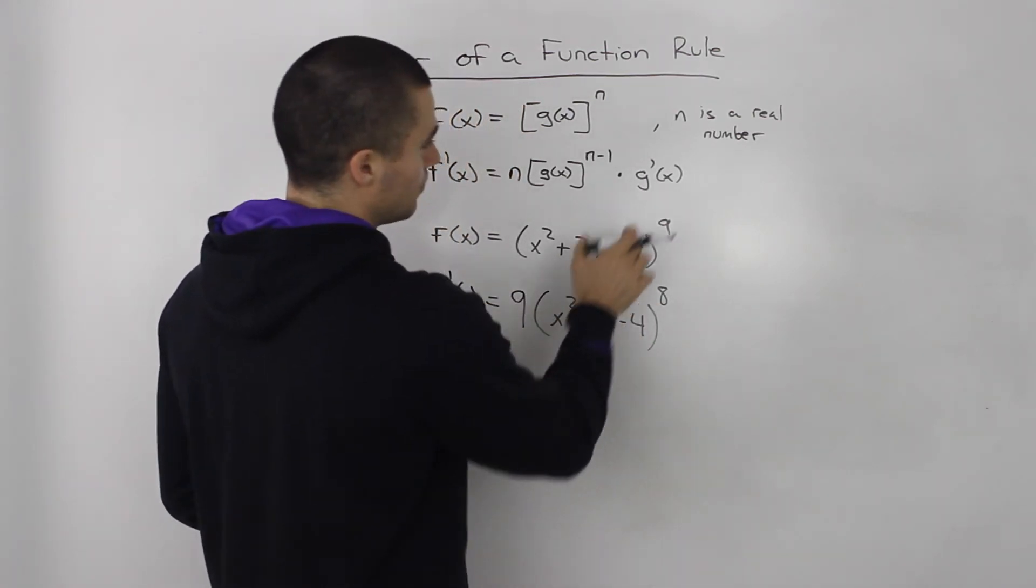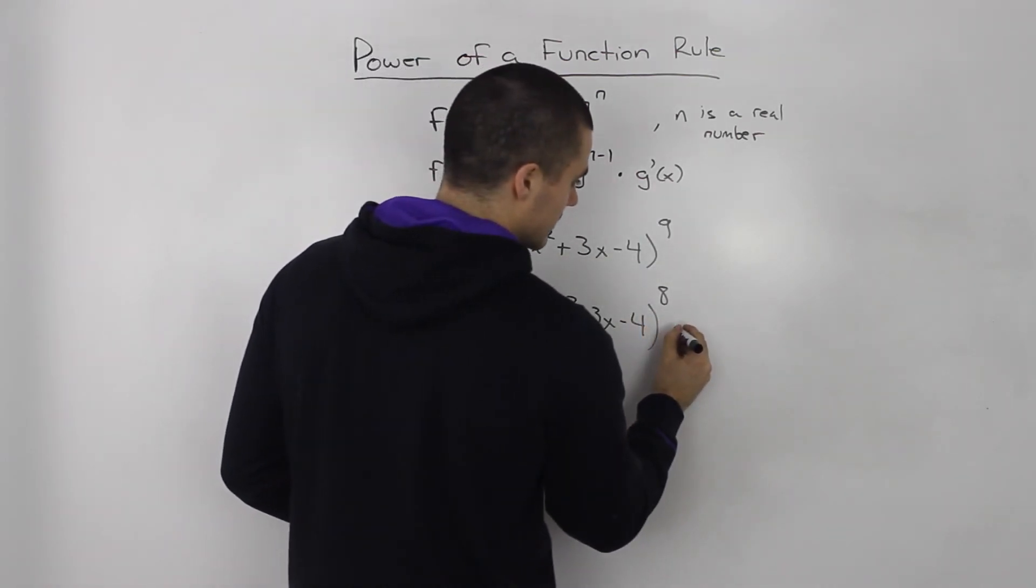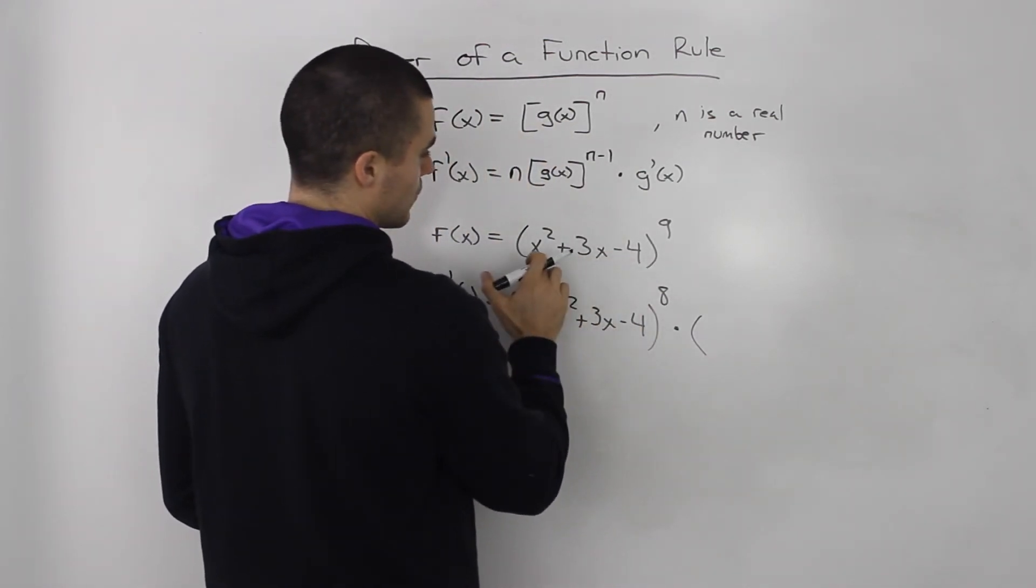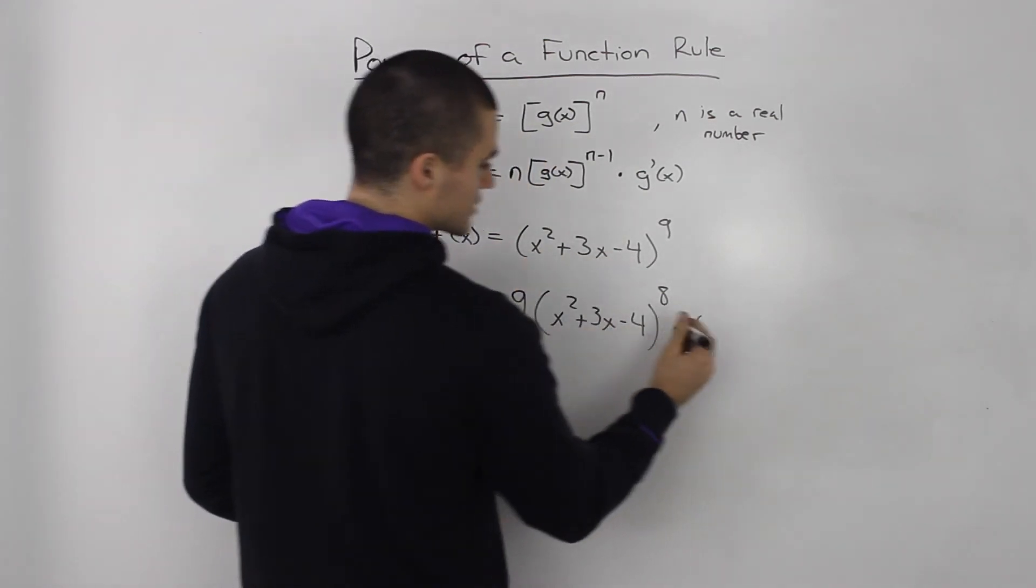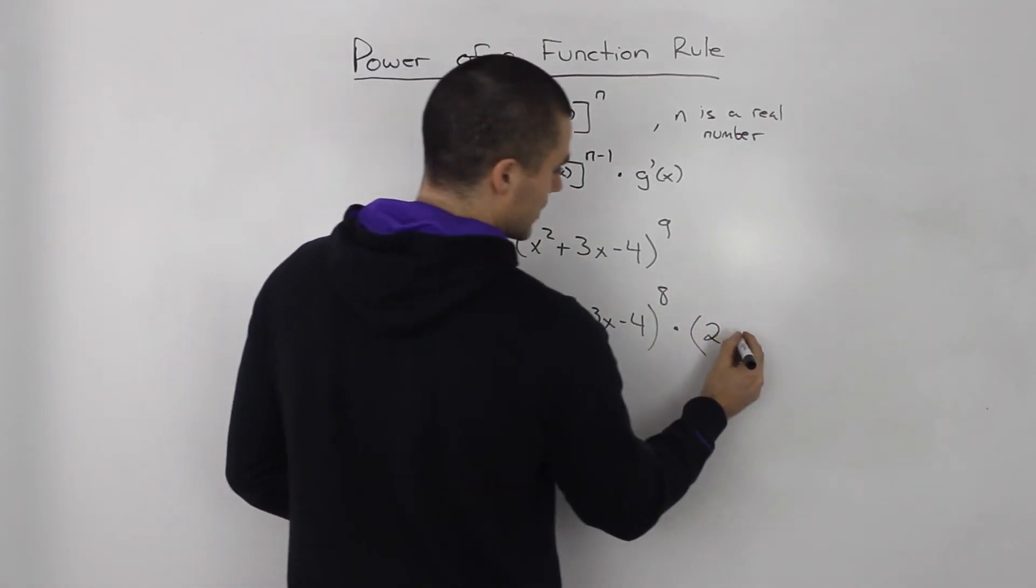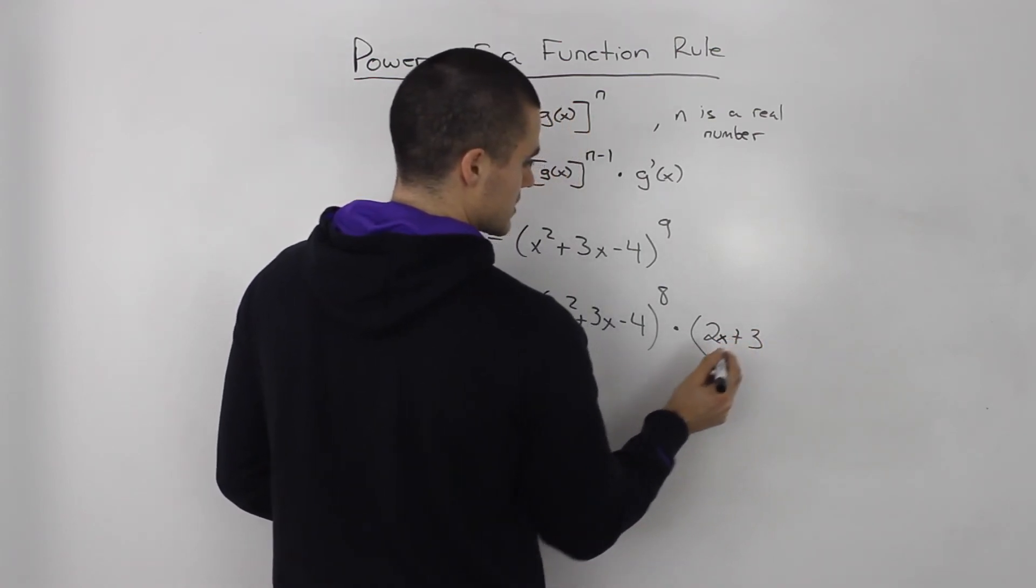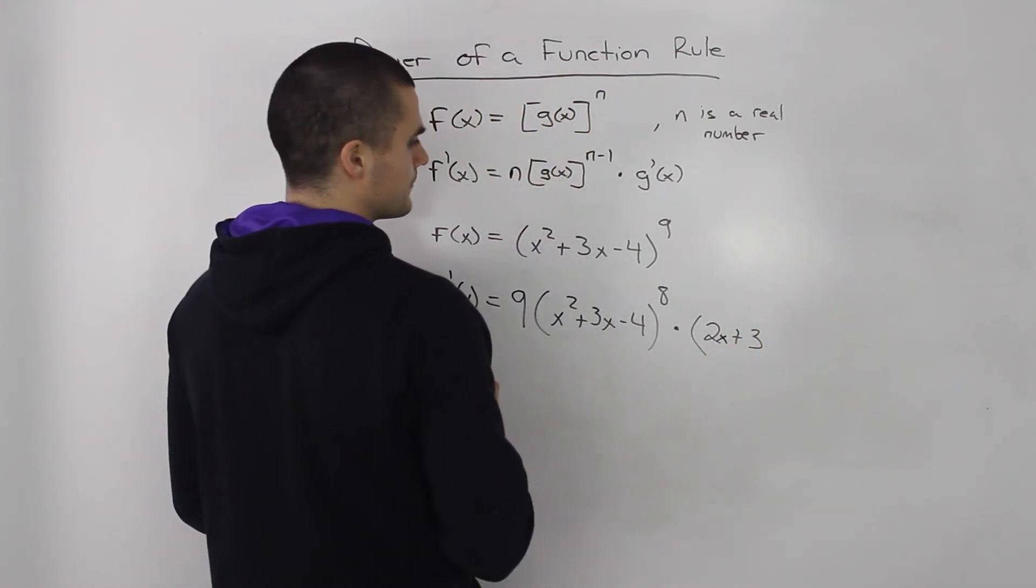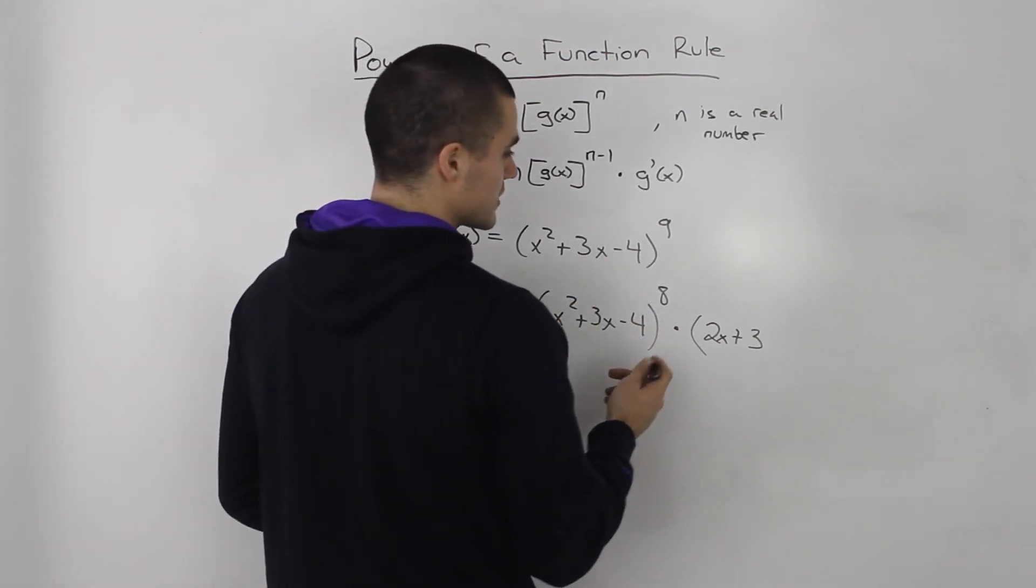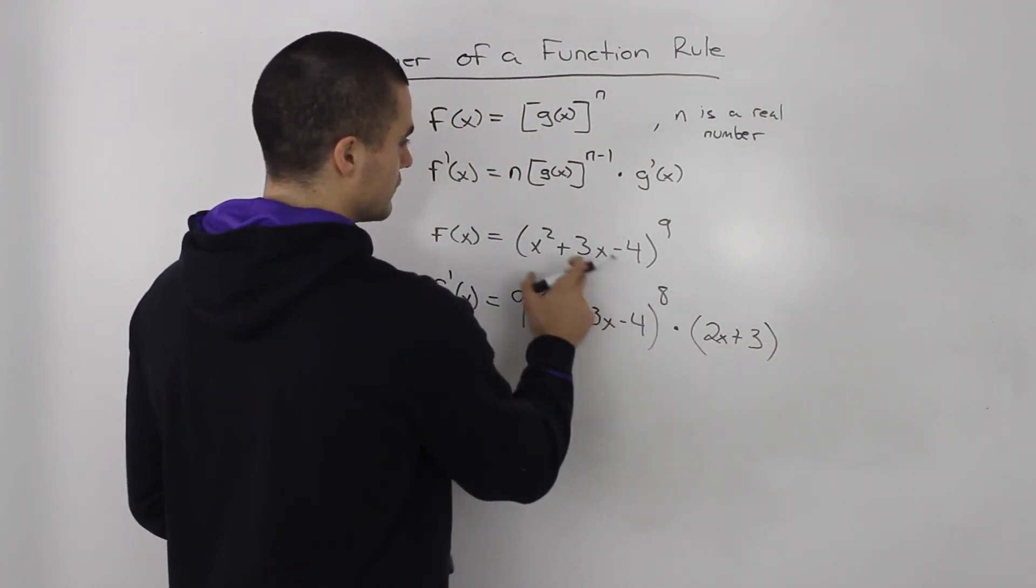So we just applied the power rule, but then we have to multiply it by the derivative of the function inside. So the derivative of x² + 3x - 4: the derivative of x² is 2x, and then the derivative of 3x is just 3. Sorry, this should be 2x here. And then the derivative of negative 4 is just 0. The derivative of a constant is 0. So that's it, that's the derivative of the function inside.